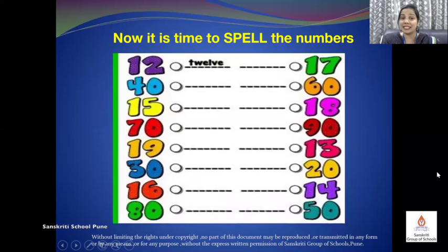Now it is time to spell the numbers, or we are supposed to write the number names for the given numbers. First is done for you. The number is 12. So we have written the spelling or the number name. That is T, W, E, L, V, E. 12. In the same manner, we write for rest of the given numbers.